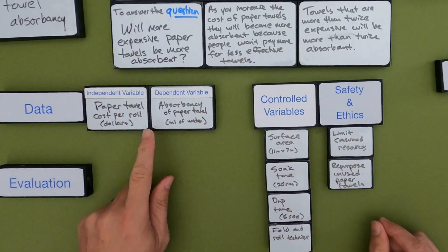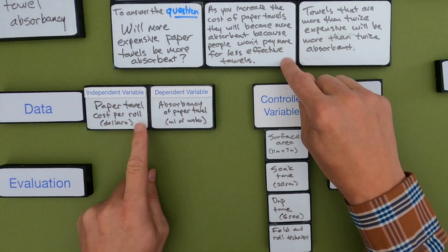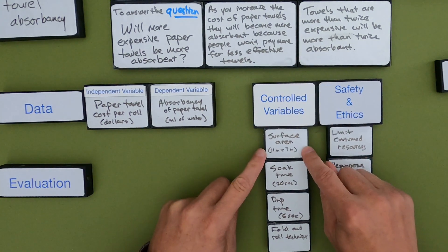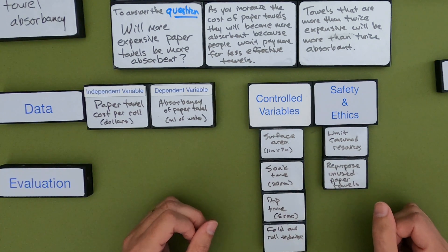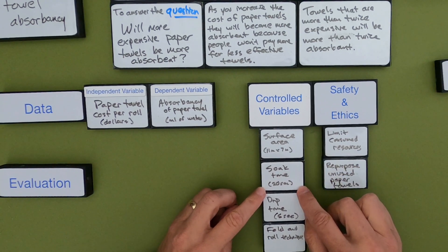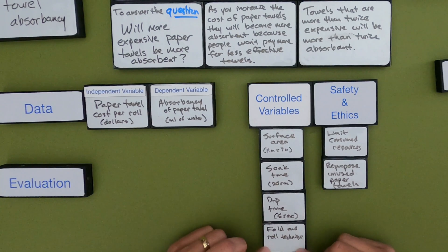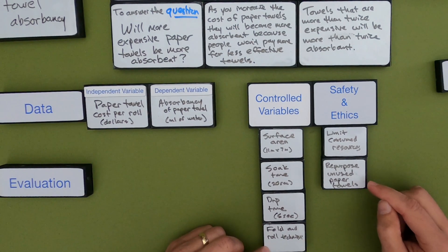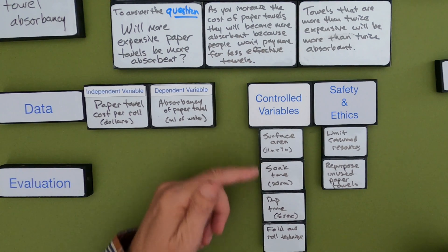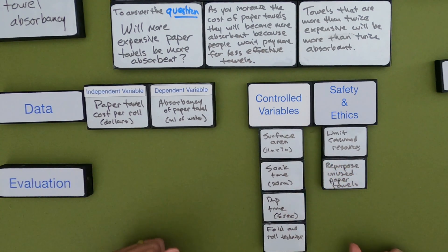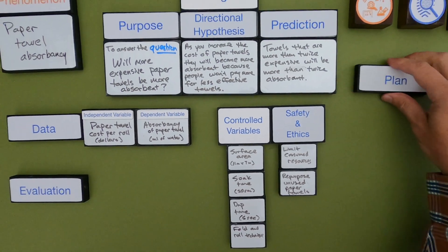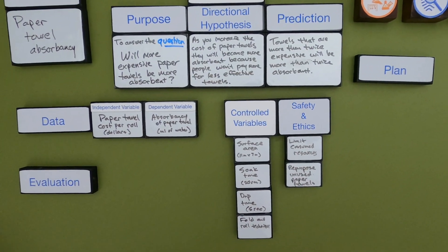My independent variable is paper towel cost per roll, and the dependent variable is absorbency. For controlled variables: all the paper towels were a little different in size, so I cut them down to the smallest paper at 11 inches by 7 inches; soak them for 20 seconds; drip the water off for 5 seconds; use the same roll technique; and limit resources by repurposing unused paper towels. We want to keep all of those controlled so we're really looking at absorbency related to cost.